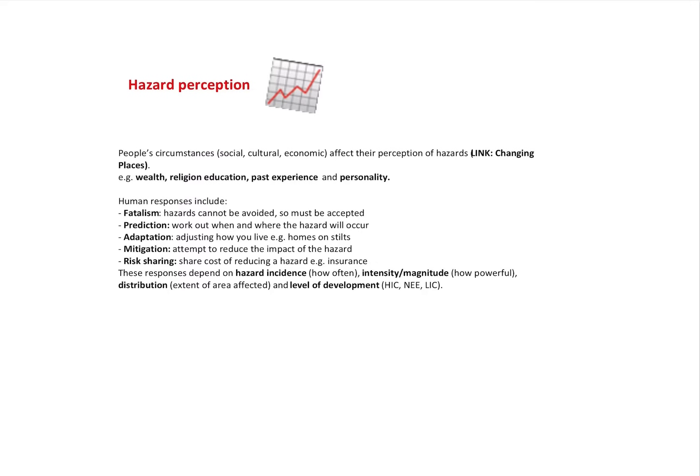So human responses here might be to have a fatalism approach, to say hazards can't be avoided so we've just got to accept it. You might work towards prediction and try to work out exactly when and where that hazard is going to occur. Try and adapt, so just how you live. Mitigation, so try and reduce the impact.